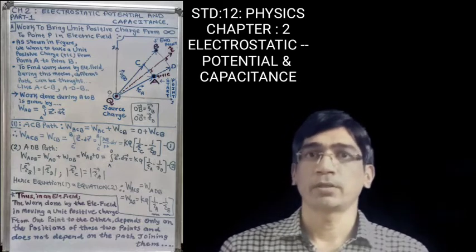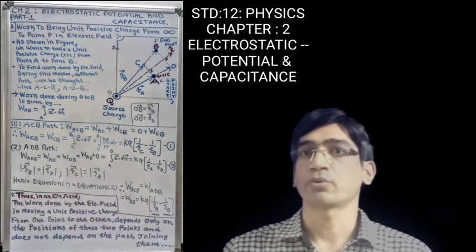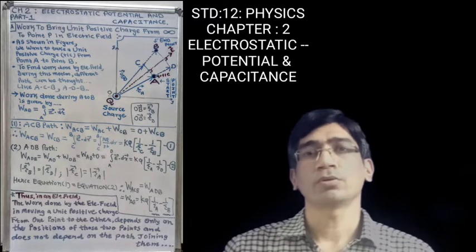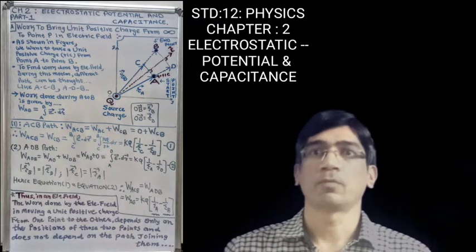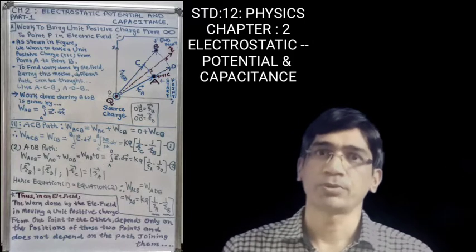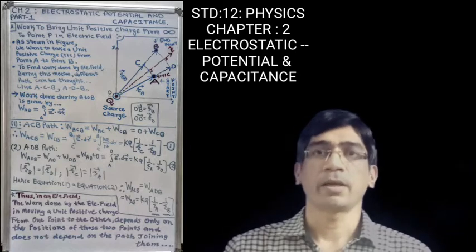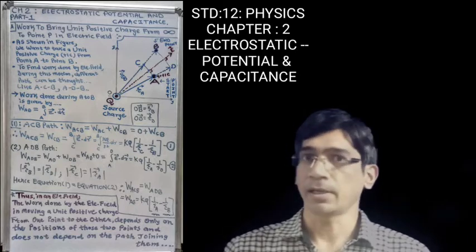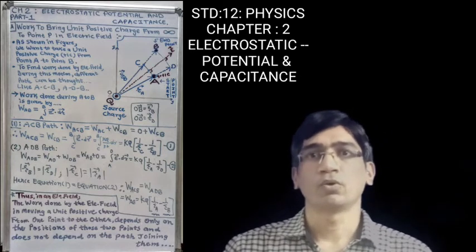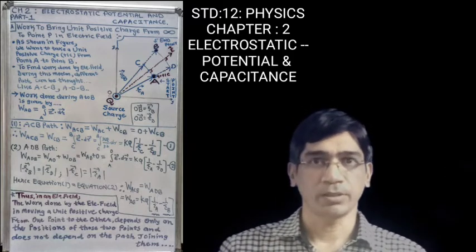Suppose if you are taking the plus capital Q charge, that is taken as a source charge, and it has its own electric field around it. So in this electric field, from infinite distance, if you bring any one unique positive charge and put that positive charge at a point inside the electric field of the source charge, then what is the work done to bring this unique positive charge? Let us understand this.